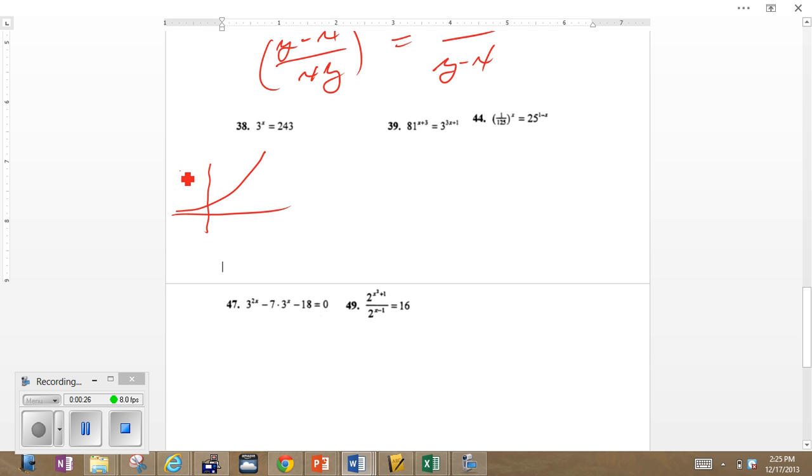So at some point it's going to equal that value of 243. So certainly there is a solution to 3 to the x equaling 243. So how are we going to find it?